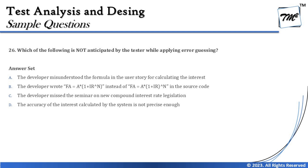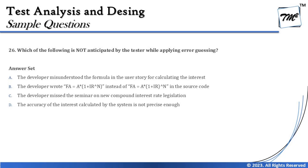Question 26 asks: which of the following is NOT anticipated by the tester while applying error guessing? Error guessing is all about intuitions and anticipations — we guess the error and try to test the system. The question asks which one is NOT an anticipation. Since we don't have context, we'll look at the options. Option A says: the developer misunderstood the formula in the user story for calculating the interest.